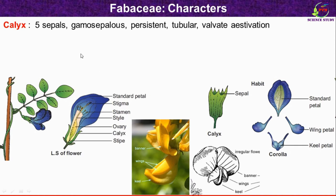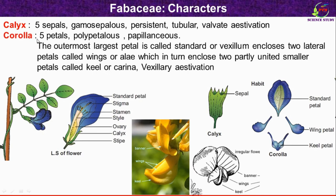After studying calyx, now we will see corolla. Corolla is made up of five petals. This is the flower of Fabaceae family member Clitoria ternatea. The flower is dissected, and here you can see five different petals. All petals are free, so they are described as polypetalous — poly meaning free and gamo meaning united. Another word used to describe the corolla of Fabaceae family members is papilionaceous corolla.